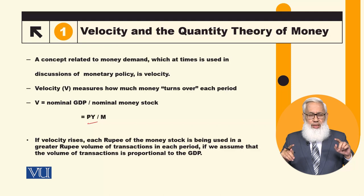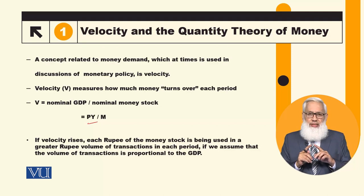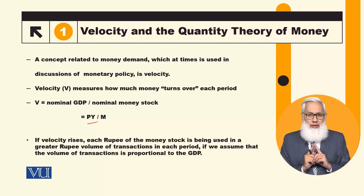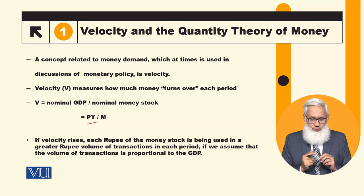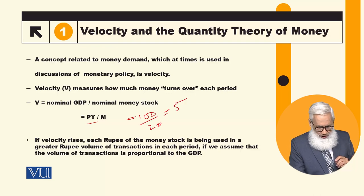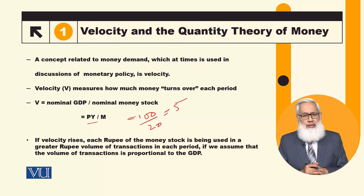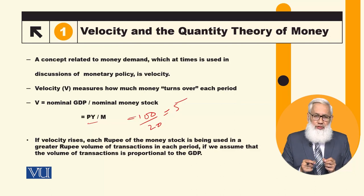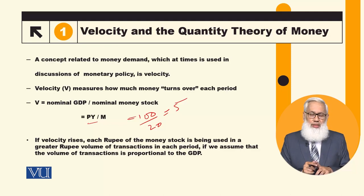The total nominal value of GDP is in the numerator and the total stock of money is in the denominator. For a simple example: if PY equals 100 and M is 20, then velocity will be 5. This means we have 20 units of currency and each unit of currency will be used 5 times in that particular time period.